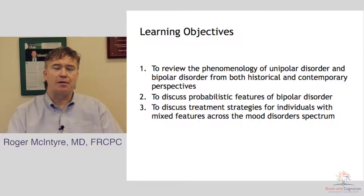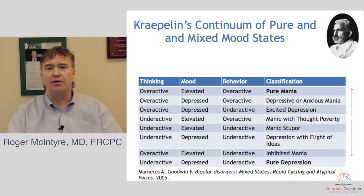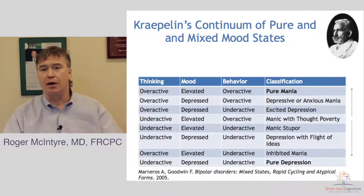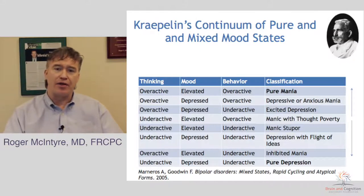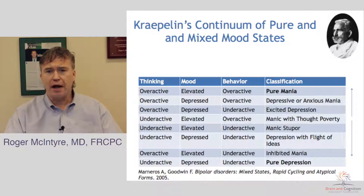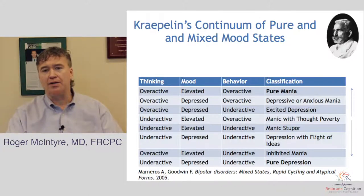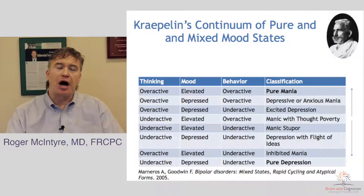What was common across many of the early descriptions was a dimensionalization of mixed features. It was Kraepelin that described the so-called unification hypothesis — the spectrum of unipolar and bipolar disorders — where all mood disorders could be conceptualized along a spectrum. That spectrum would be either a disturbance in how people feel (their mood), how they think, or their activity, called volition. I call that MTV: mood, thought, and volition.